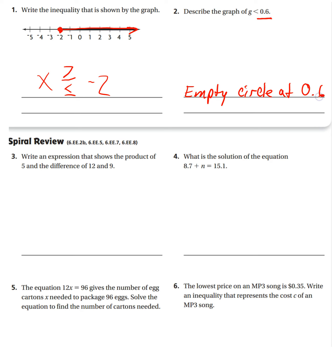You're going to have an empty circle at, where is that empty circle going to go? 0.6, with shading to the, which direction? It says G is less than, less than is which direction, so you're going to write in that direction here, and then you'll be done.